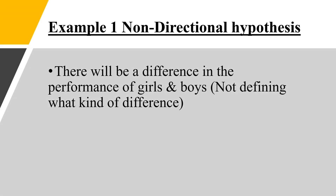Example number one, the non-directional hypothesis: There will be a difference in the performance of girls and boys, but it does not define what kind of difference. That difference may be positive or it may be negative — it gives no indication of what the result will be. So that is an example of a non-directional hypothesis.